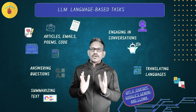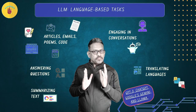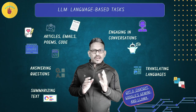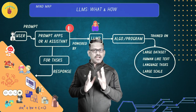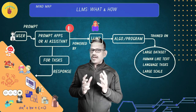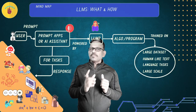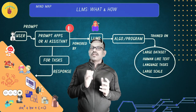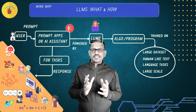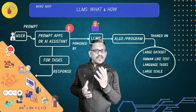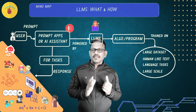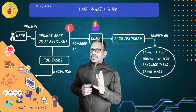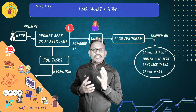Let's take a pause and check our learning map. We had a question about what LLM is and how it acquired vast knowledge. The answer is: it is an algorithm, or in simple language, a program called a neural network, trained on a large dataset to generate human-like text and perform language tasks at a large scale. It required terabytes or even petabytes of data, and to process it — racks of servers, machines, GPUs, and TPUs.